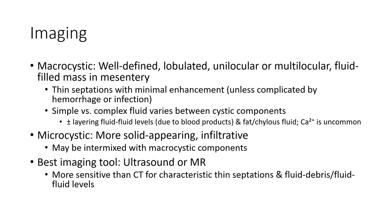Macrocystic lymphatic malformation appears as a lobulated, unilocular or multilocular fluid-filled mass in the mesentery with minimal enhancement. It is less commonly complicated by hemorrhage or infection, containing simple or viscous complex fluid with latent cystic components, plus or minus fluid-fluid levels, fat, and chylous fluid.